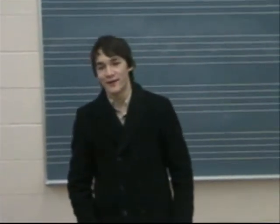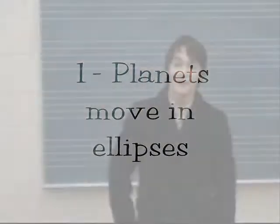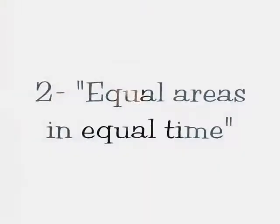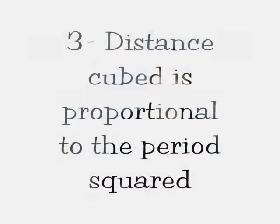Kepler's three laws are: 1. Planets move in ellipses. 2. Equal areas in equal time. And 3. The distance cubed is proportional to the period squared.